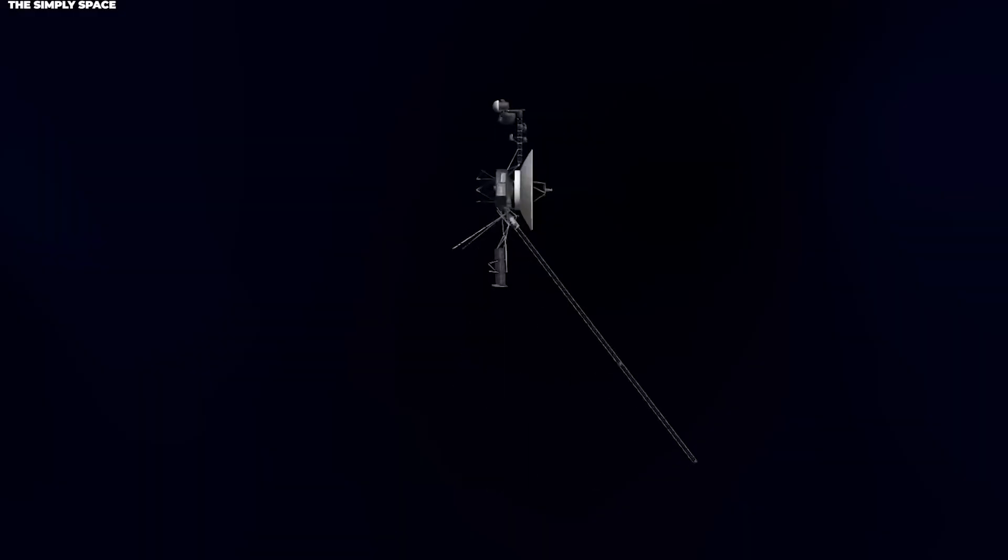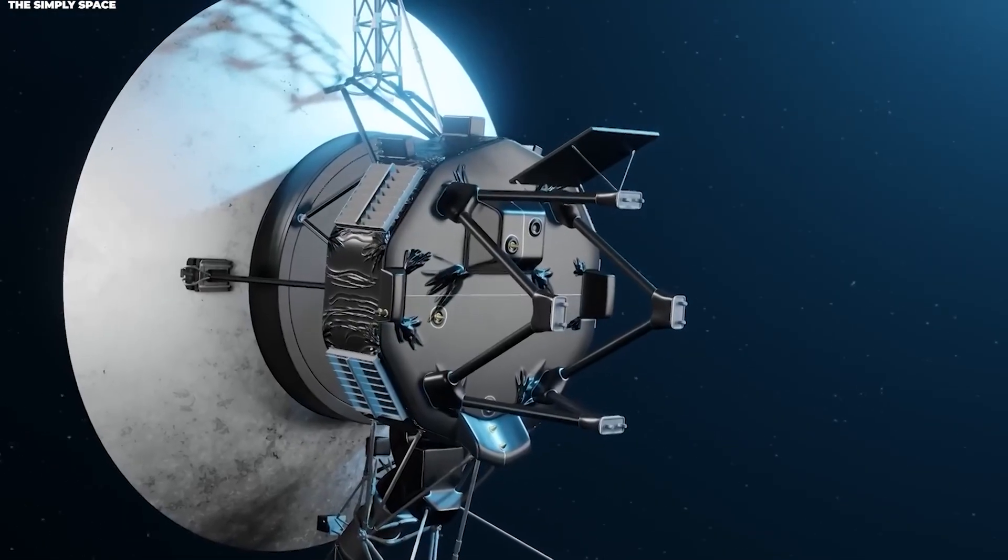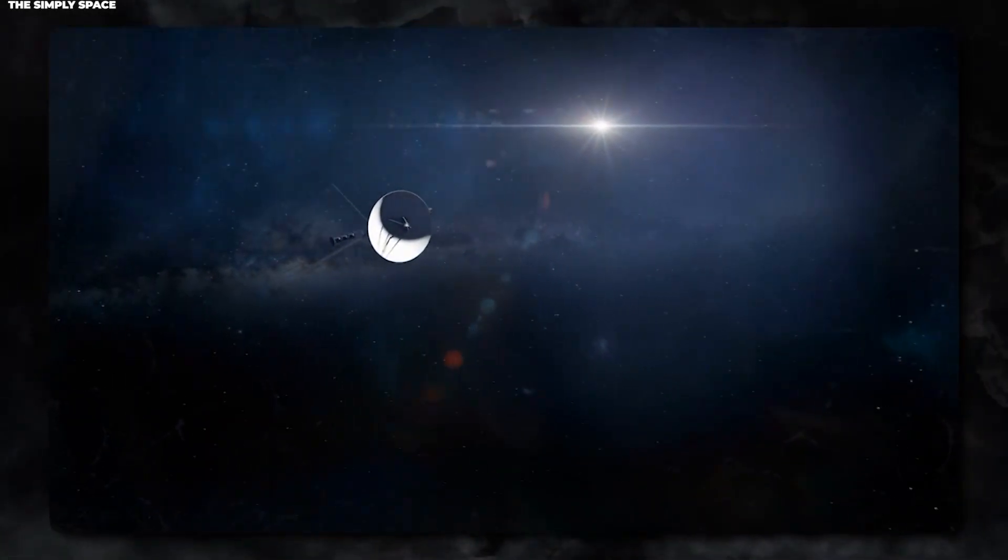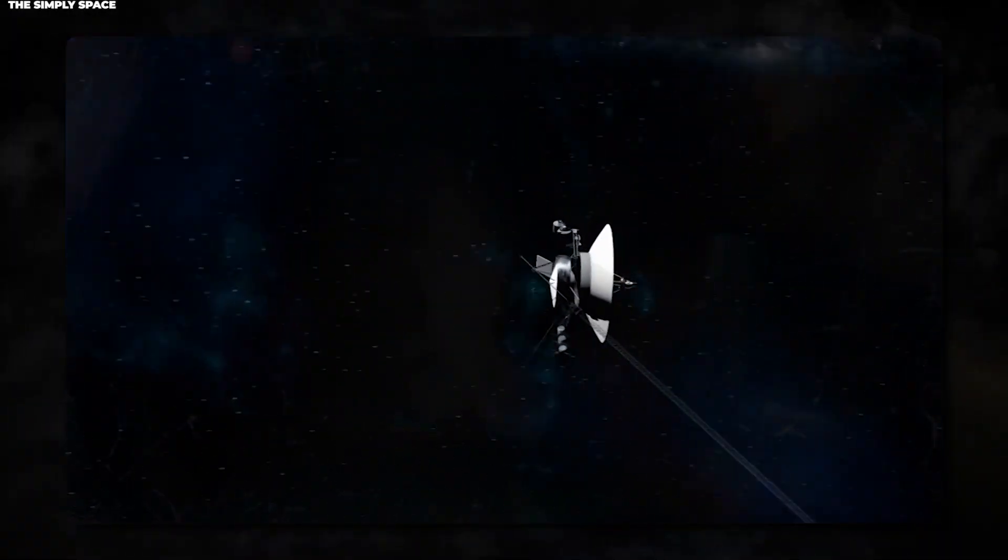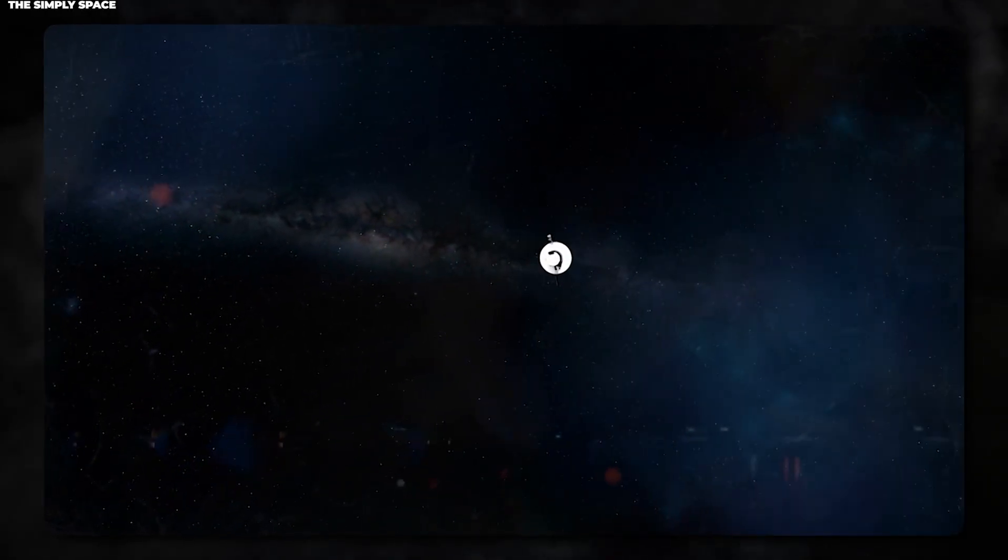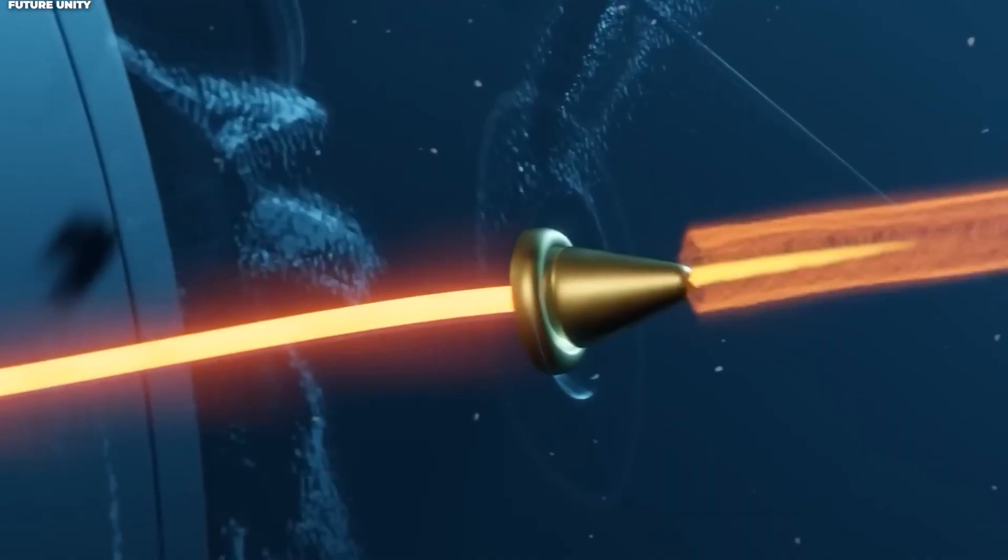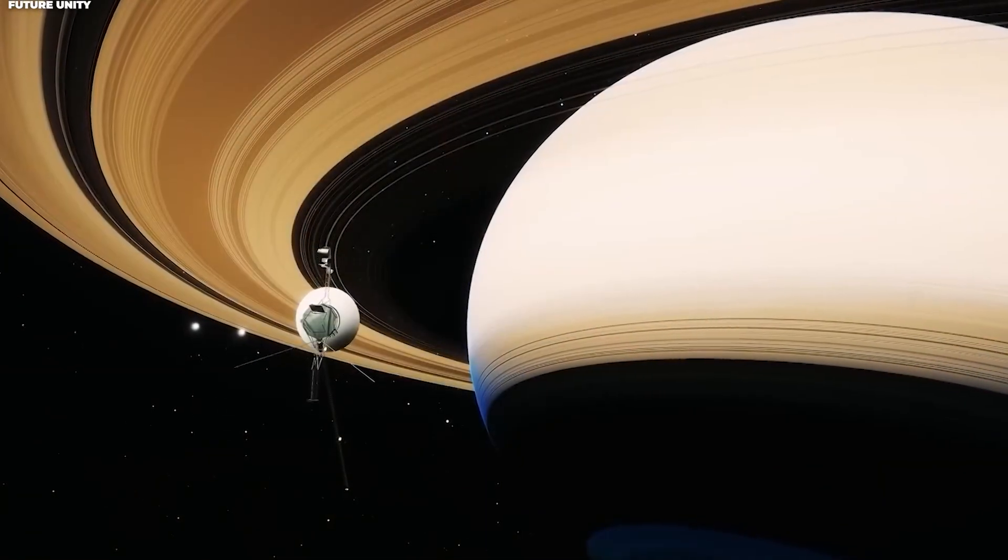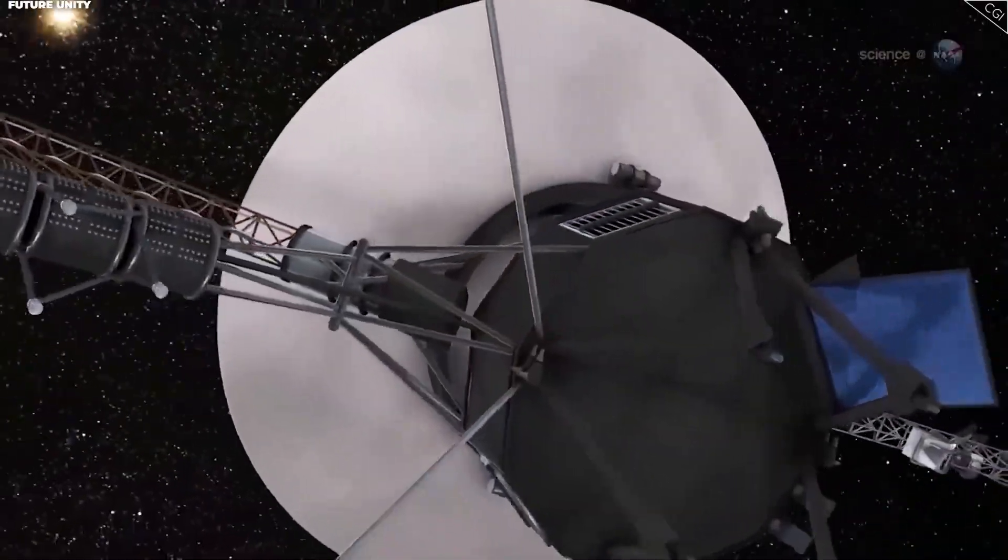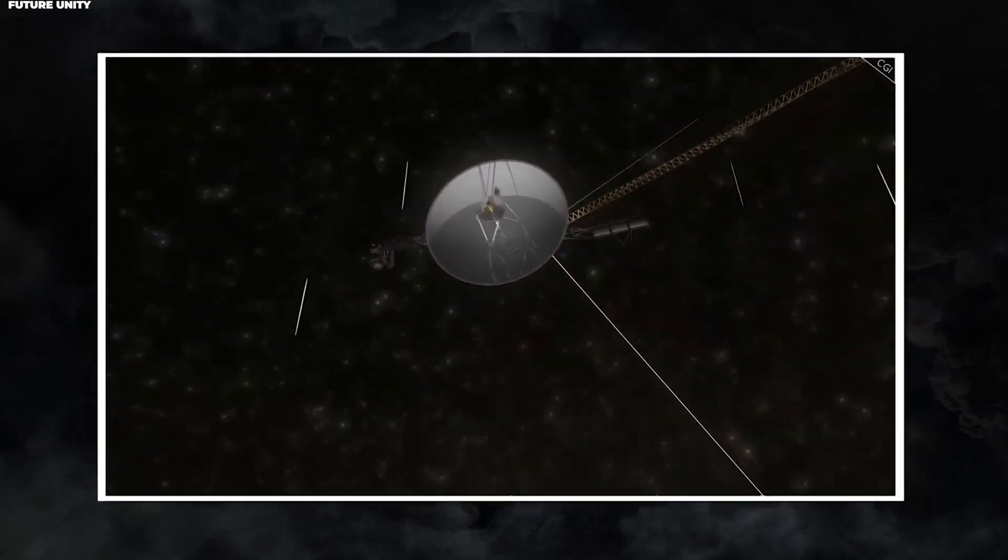The team developed a plan. They would orient Voyager 1 in a specific direction and activate certain instruments at calculated times to maximize the chances of detecting any signals from the comet. This wasn't easy. Voyager 1 doesn't have much fuel left for maneuvering. In fact, its primary thrusters had degraded so much that in 2018, engineers had to switch to a backup set of thrusters that hadn't been used since 1980. These trajectory-correction maneuver thrusters were designed for tiny adjustments during planetary flybys decades ago, and suddenly they were being called back into service.